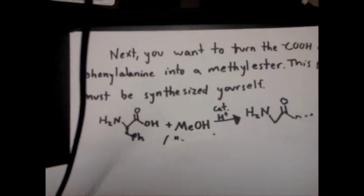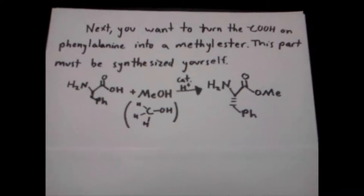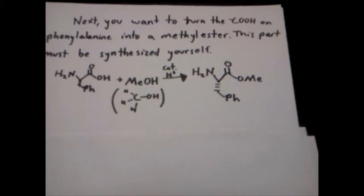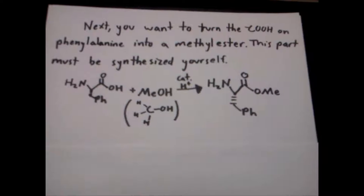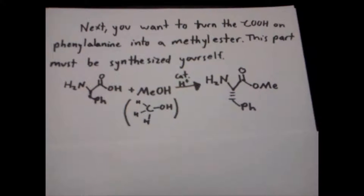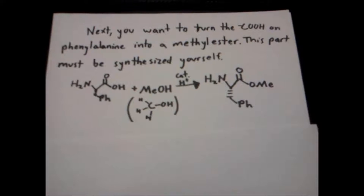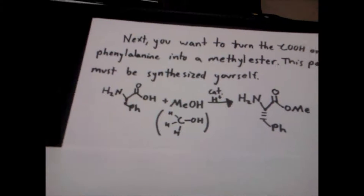The next step of the synthesis is turning the carboxylic acid group on phenylalanine into a methyl ester, because aspartame has a methyl ester on the phenylalanine's carboxylic acid position. This is a pretty simple synthesis — we dissolve phenylalanine in a large excess of methanol, because normally the carboxylic acid is vastly thermodynamically favored over the ester. But due to Le Chatelier's principle, we can shift that equilibrium over to the ester side by using a vast abundance of methanol.